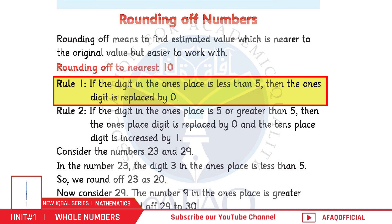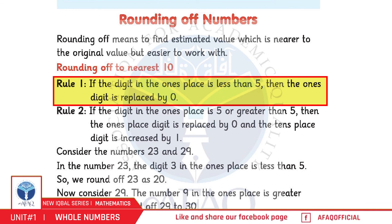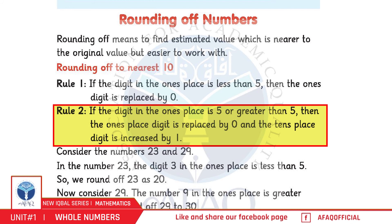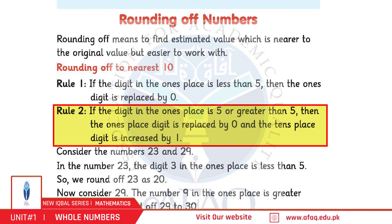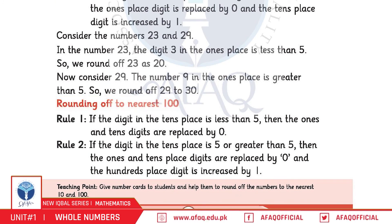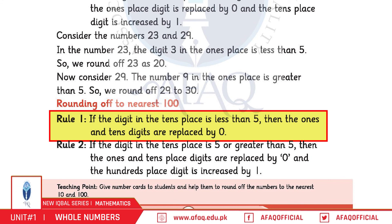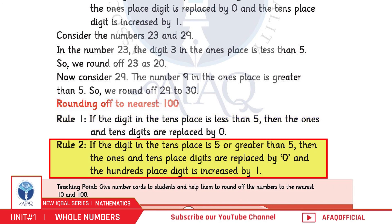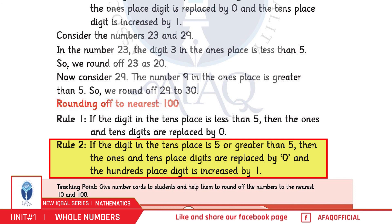Rule 1: If the ones digit is less than 5, replace it with zero (round down). Rule 2: If the ones digit is 5 or more, replace it with zero and increase the tens place by one. Rounding off to nearest hundred — apply the same rules: if the tens and ones digits are less than 50, round down; if 50 or more, increase the hundreds place by one.